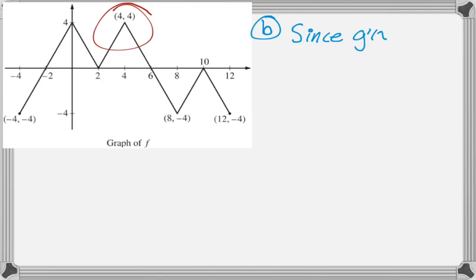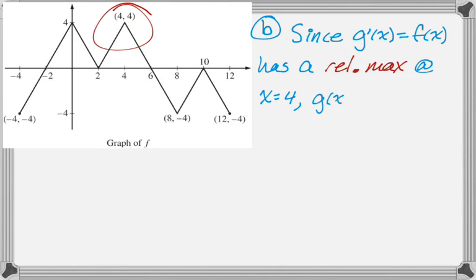Since g prime of x, which is equal to f of x, has a relative maximum at x equals 4, we know that g of x has a point of inflection. So a really common misconception is that the derivative needs to be differentiable at a point at which the function, the original function, has a point of inflection. That's not the case at all. What you really just need is for the first derivative to change direction, which means that if it has a maximum or a minimum, it changes direction.